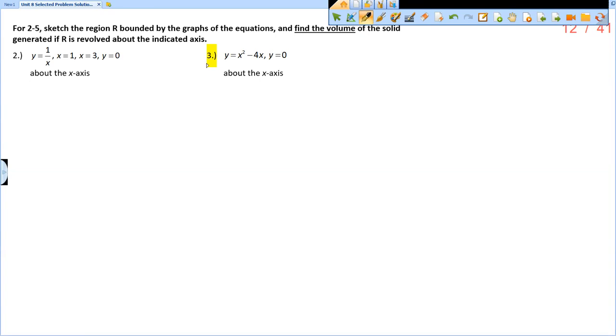This is the solution video for section 8.2, problem number three. It says sketch the region R bounded by the graphs of the equations and find the volume of the solid generated if R is revolved about the indicated axis.